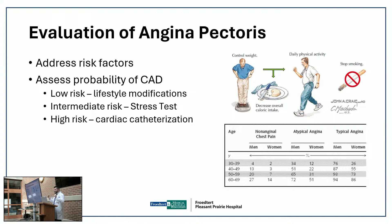Intermediate-risk patients — those who get chest discomfort after a block or two but it resolves when they stop — usually come to the clinic after seeing their primary care physician. This leads to a stress test. We have different types: treadmill stress tests, nuclear medicine stress tests, and echocardiogram stress tests. Some use a treadmill, some don't; some use nuclear imaging, some use echocardiography. If there's an abnormality, we proceed to cardiac catheterization.